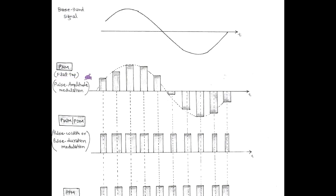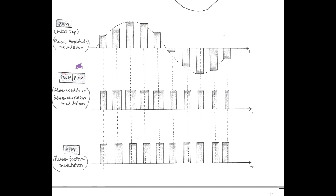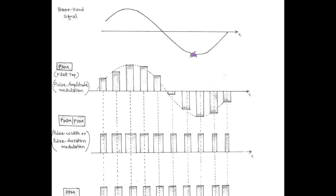In PWM or PDM, amplitude remains constant. Only the width of each pulse in a periodic pulse train varies continuously in accordance with the message signal. The process where the width of the pulse train varies according to the message signal is called pulse width modulation or pulse duration modulation.